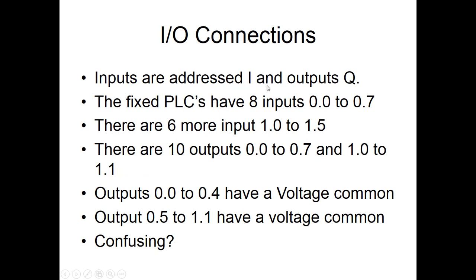Inputs are addressed I, outputs Q. So it was kind of interesting that it had eight inputs from 0.0 up to 0.7. And then it had six more because these are grouped in eights from 1.0 to 1.5. So the ten outputs were a little bit confusing because the first eight were 0.0 once again up to 0.7. And then it started to 1.0 to 1.1. But the voltage taps and the voltage commons were grouped by five. 0, 1, 2, 3, 4. And 5, 6, 7. And then it started 0, 1. And so this was a little bit confusing.